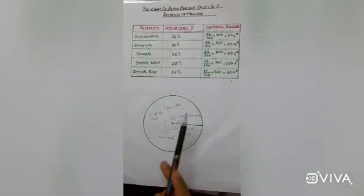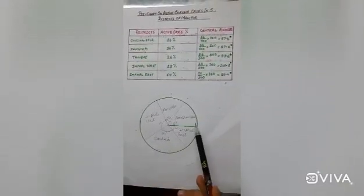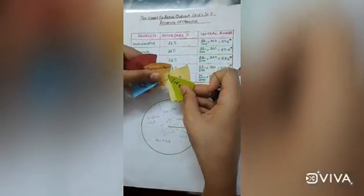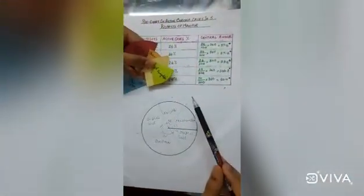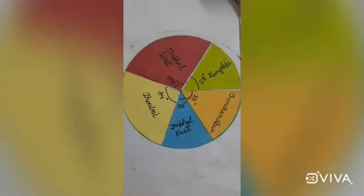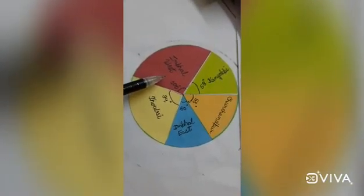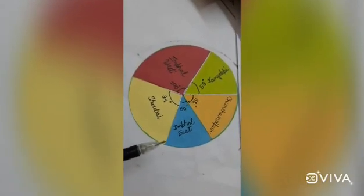As you can see, I've made all the angles. Now, to make this pie chart look more beautiful and attractive, we will paste different color sheets for different angles. Here I have the cuttings of different angles which I've made with the use of art and mathematics. Here you can see I've pasted all the angles. By seeing the pie chart, we can tell that Imphal West is having the highest percentage of total cases and Imphal East is having the lowest number of cases.